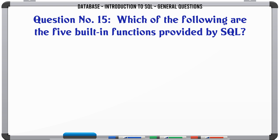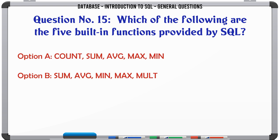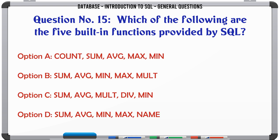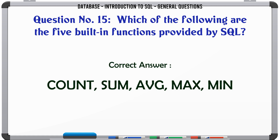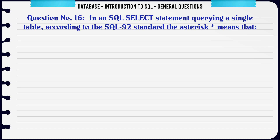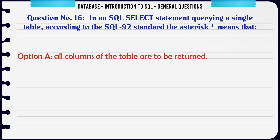Which of the following are the five built-in functions provided by SQL? A. Count, sum, average, max, min. B. Sum, average, min, max, mult. C. Sum, average, mult, div, min. D. Sum, average, min, max, name. The correct answer is: count, sum, average, max, min.